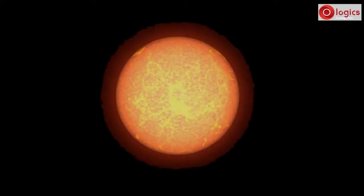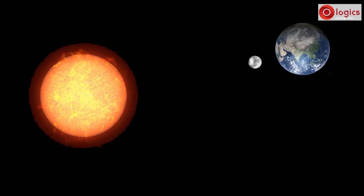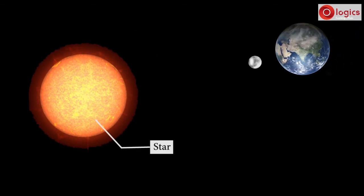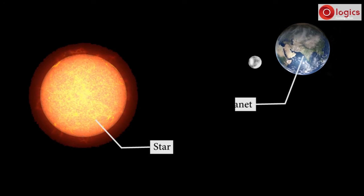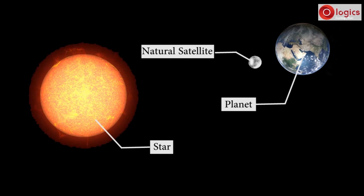So far, we understand about Sun, Earth, and Moon. Sun is a star, Earth is a planet, Moon is a natural satellite of Earth.